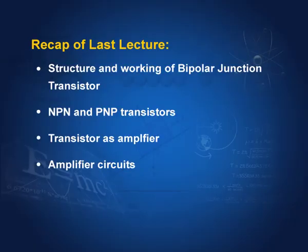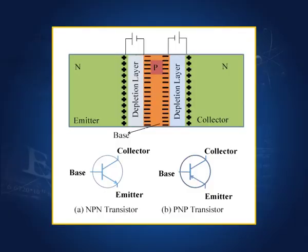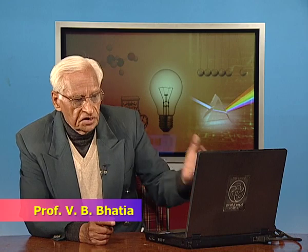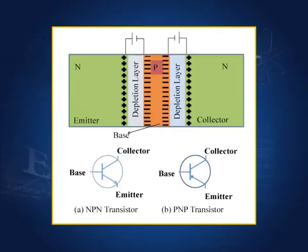In the last lecture, we learned about the structure of a transistor and something about its working. We also saw the symbol for the NPN and the PNP transistor. How do you recognize one from the other? By the arrow. If the emitter arrow points outwards, it is an NPN transistor. If it points inwards, then it is a PNP transistor. We shall continue with the study of the working of the transistor, how it works as an amplifier and what properties it has as an amplifier.